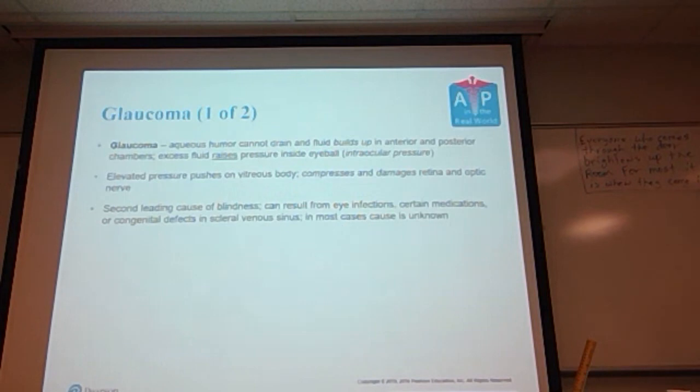One more thing we'll talk about with eyeballs and then I'm going to take a break: glaucoma. Again, another condition with the eyes. If you've ever gone to the eye doctor and they took that little probe and punched your eye—they put a little drop in your eye to deaden your eye and they put this little thing that looks similar to a no-touch thermometer and they touch the surface of your eyeball, or in the old days you would have to sit there with your eyes open really wide and they would blow a puff of air into your eye—that's testing for glaucoma. Glaucoma occurs when the aqueous humor cannot drain and the fluid builds up in the anterior posterior chamber. That excess fluid raises pressure inside the eyeball, which is called the intraocular pressure. This elevated pressure pushes on the vitreous humor.